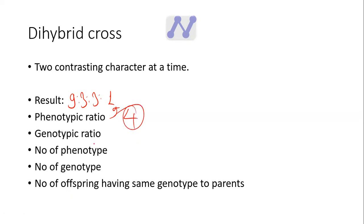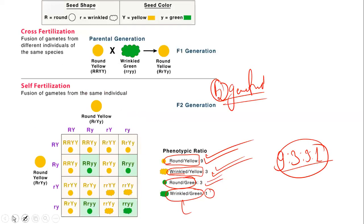The phenotypic ratio is 9:3:3:1, where round yellow accounts for the largest proportion. This is the phenotypic ratio of the dihybrid cross.